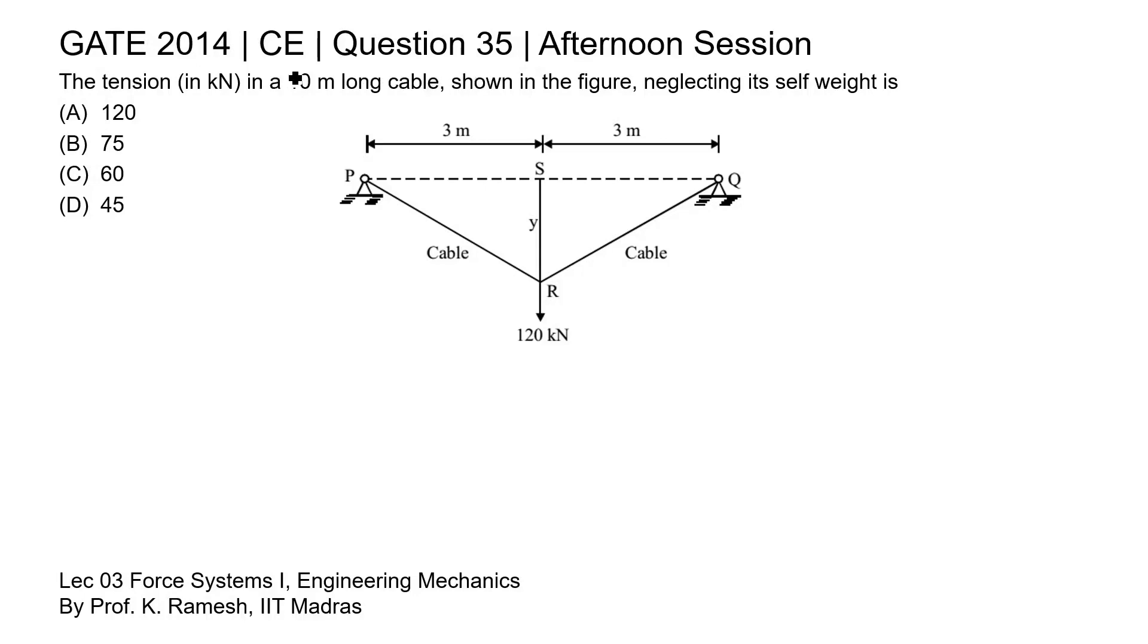This is question 35 of civil engineering paper GATE 2014 afternoon session. The tension in a 10 meter long cable shown in the figure neglecting its self weight is. In this question a figure is given which is depicting a cable subjected to a force of 120 kilonewton.